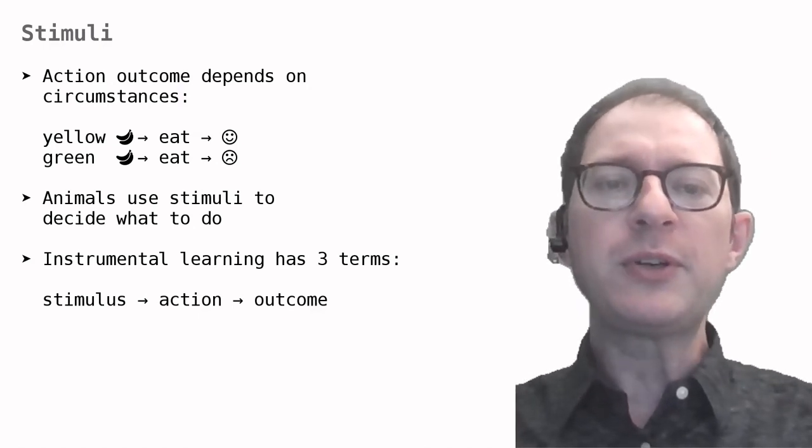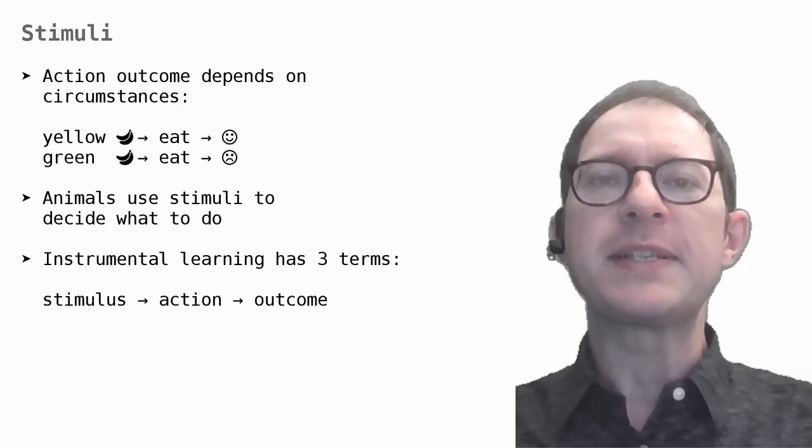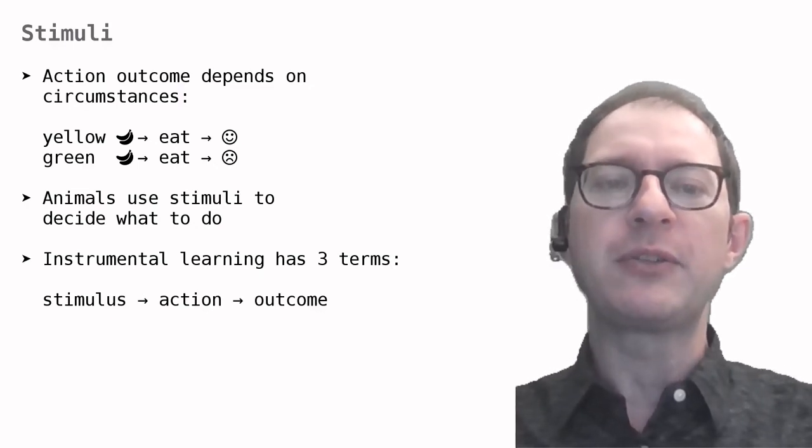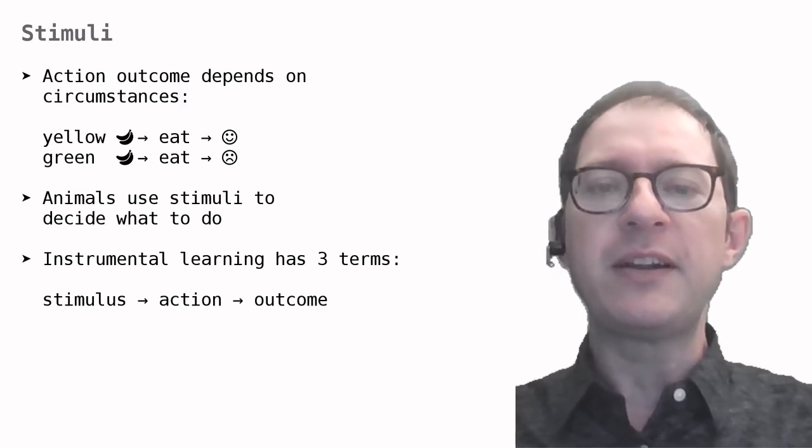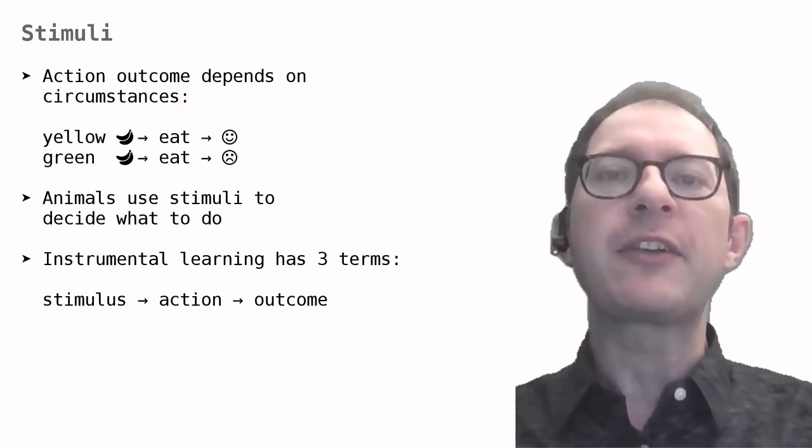If we introduce this rule into our instrumental conditioning experiment, the rat will learn quickly that it is useless to press when the light is off. We will go into more detail in future lessons, but for now we should keep in mind that animals can learn different actions depending on what stimuli they are perceiving. This means that there are three things that are important in instrumental conditioning: what stimuli are there, what actions the animal can do, and what are the outcomes of these actions.